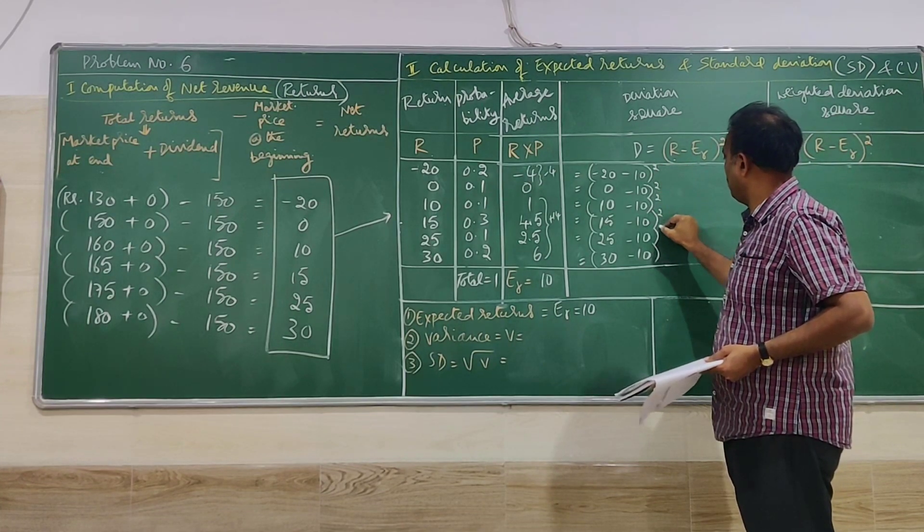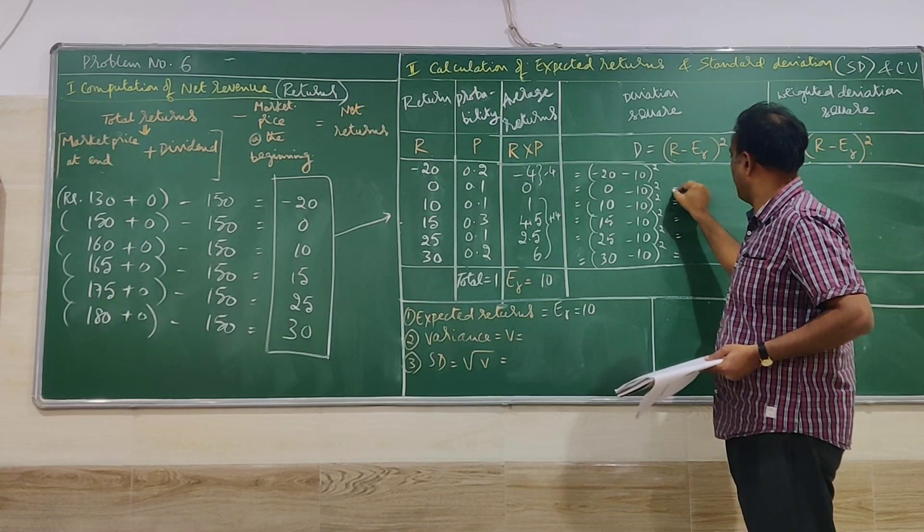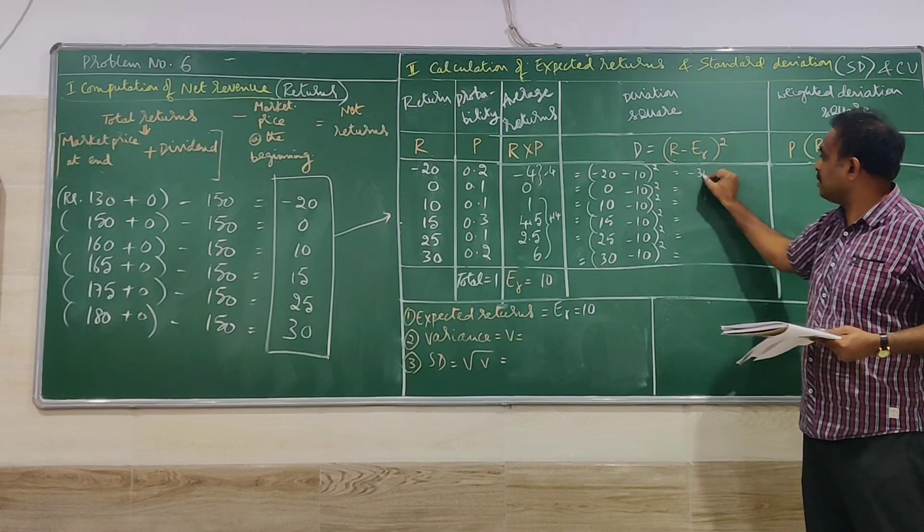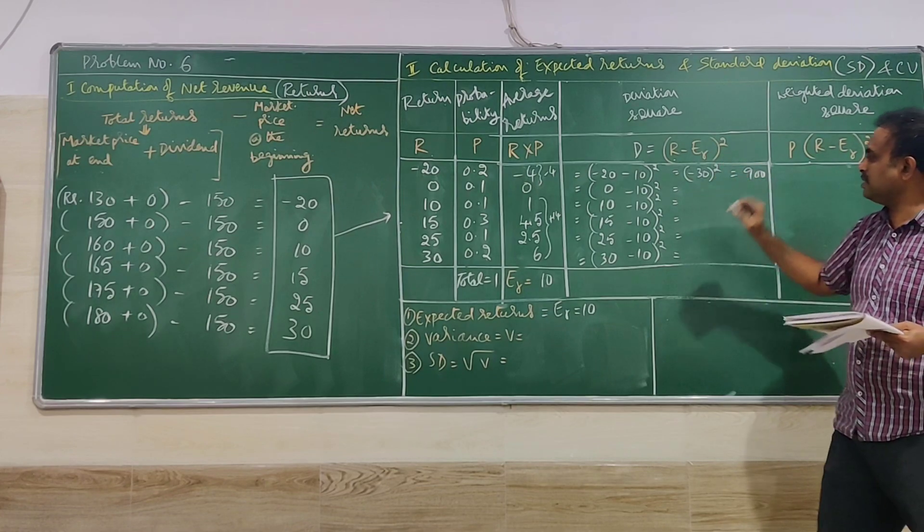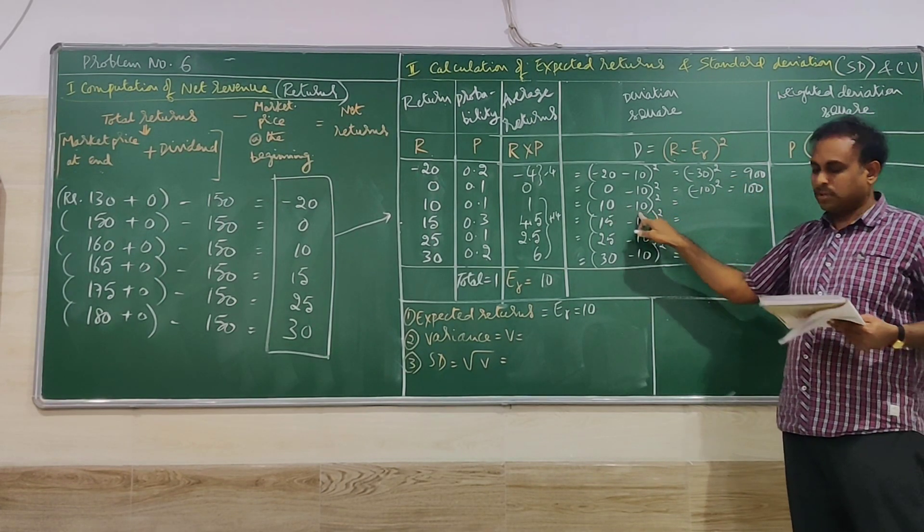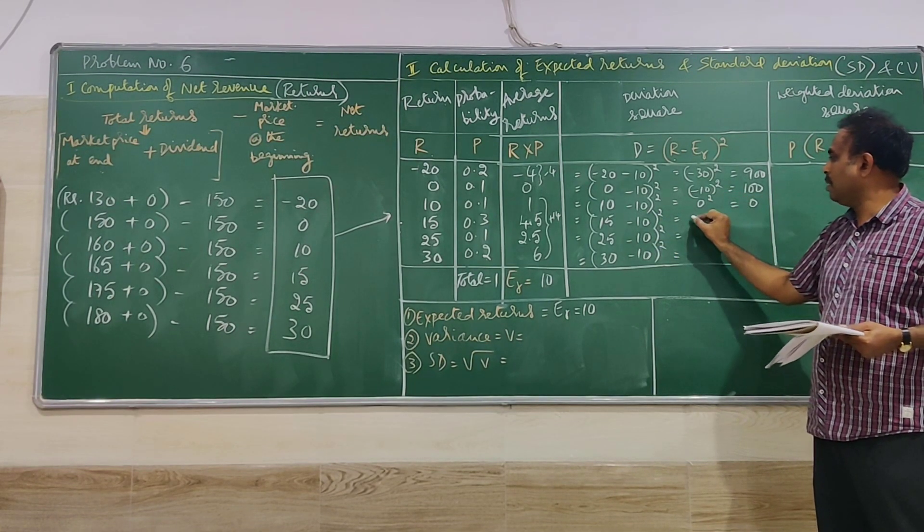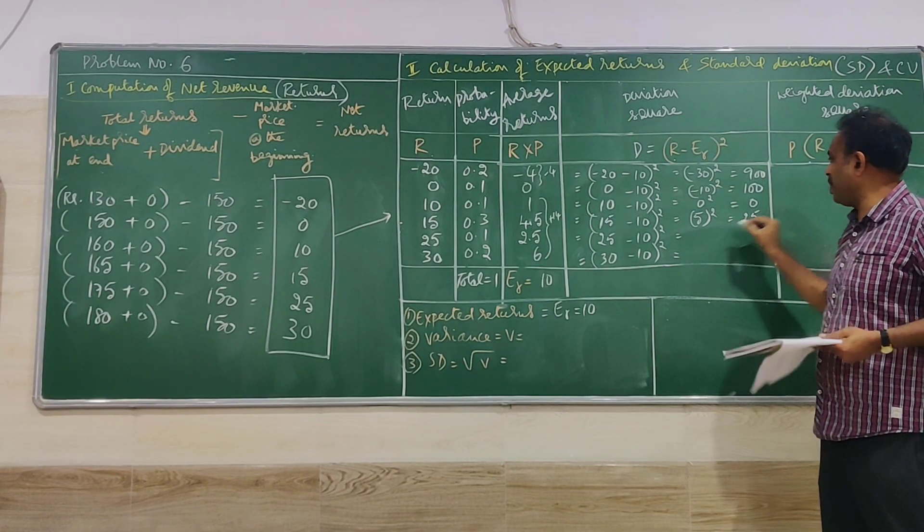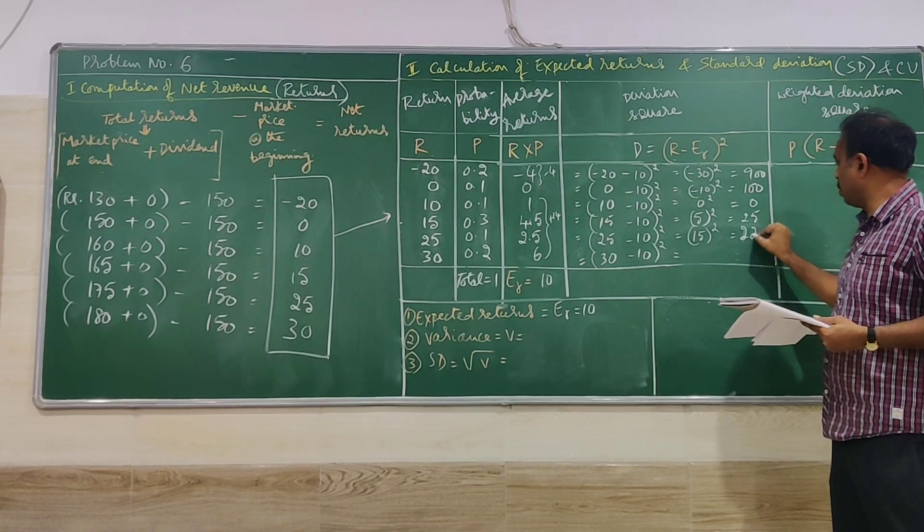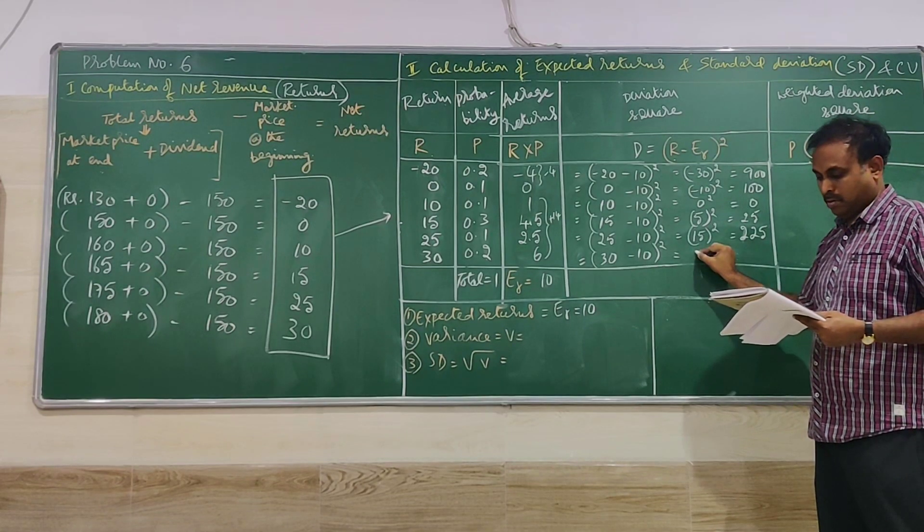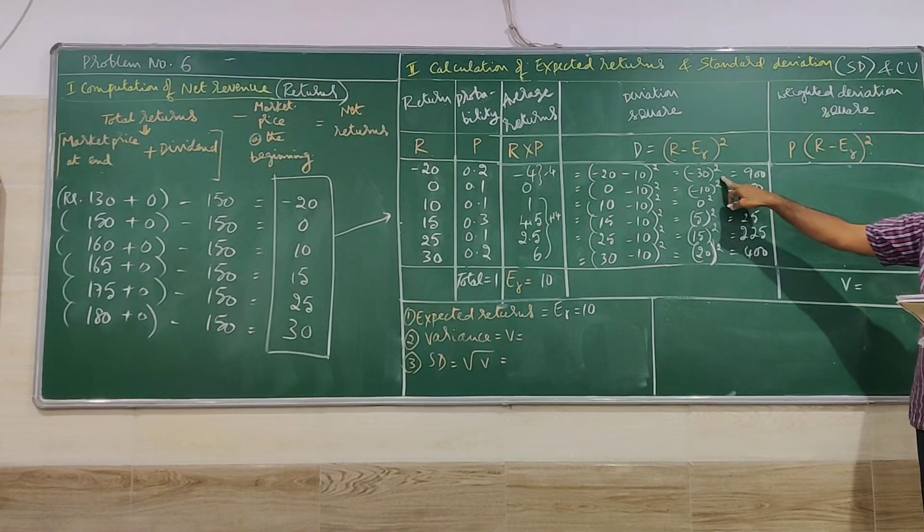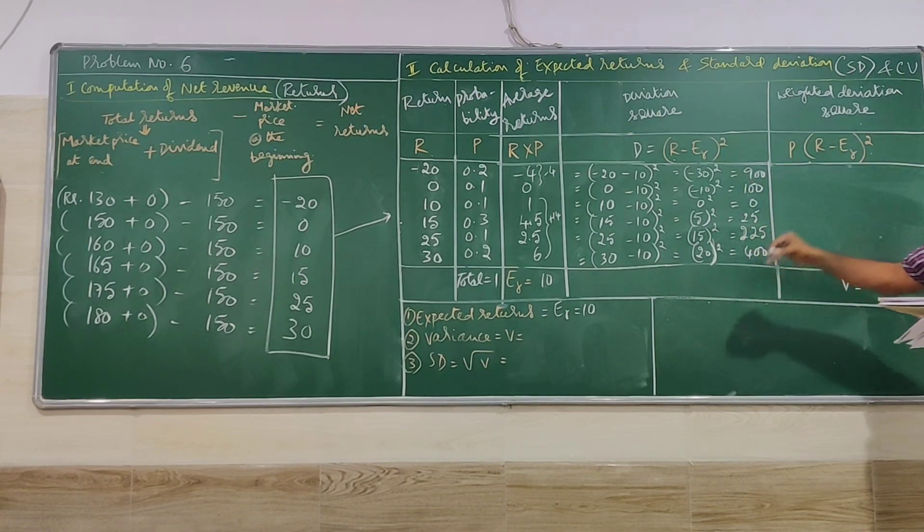We have to be careful here. Minus 20 minus 10, that is equal to minus 30 whole square. So minus 30 into minus 30 is 900. So here it is going to be minus 10. Minus 10 into minus 10 is 100. 0 square is 0 only. Then 5 square becomes 25. 15 square is 225. 20 square is equal to 400. So we have to be careful when you are getting minus, and we have to work carefully. Otherwise you have to write separately and rework it.